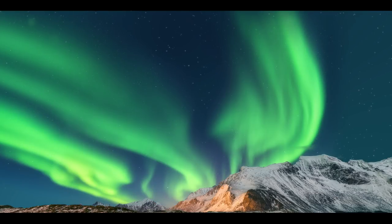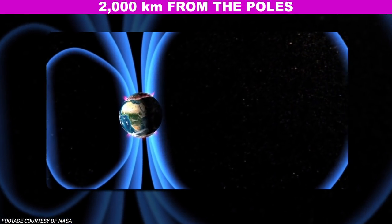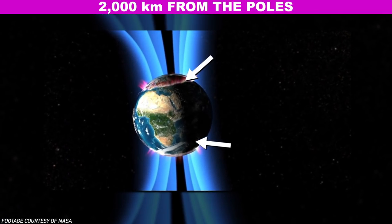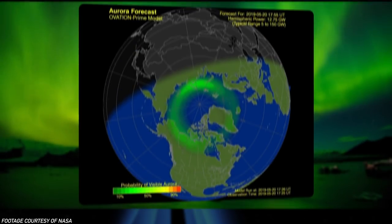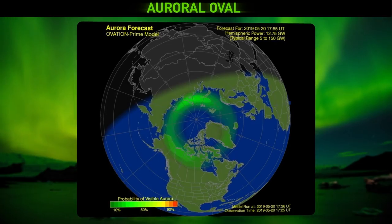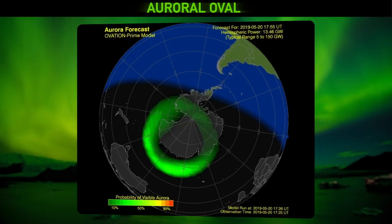Because of how our magnetic field is shaped, and the height auroras typically happen above the Earth's surface, the best place to see an aurora is actually not right at the magnetic poles, but anywhere in an oval-shaped zone about 2,000 kilometers from the poles. This zone is called the auroral oval, and it's much easier to be in the auroral oval if you go north, because the southern one is mostly over Antarctica and the Antarctic Ocean.